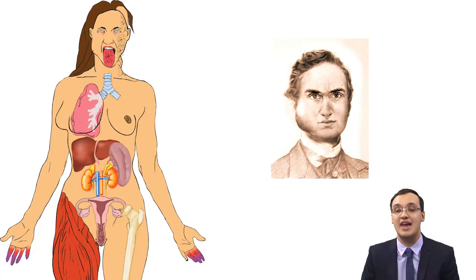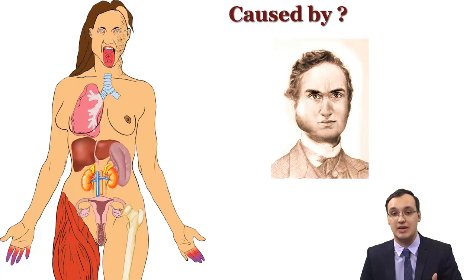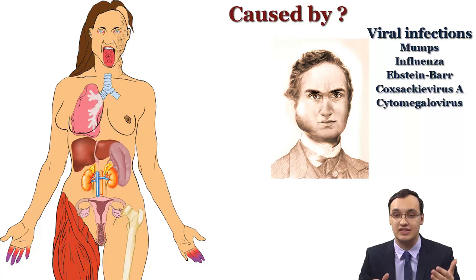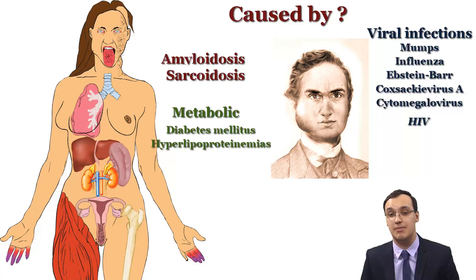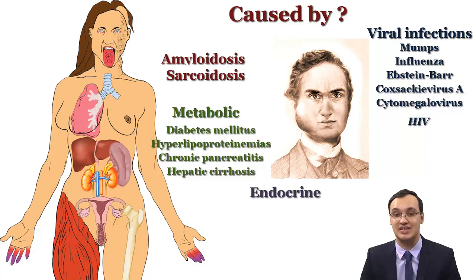Enlarged parotid glands can be caused by viral infections like mumps, influenza, Epstein-Barr, Coxsackievirus A, cytomegalovirus, and even HIV. It can also be caused by amyloidosis, sarcoidosis, metabolic problems like diabetes mellitus, hyperlipoproteinemia, chronic pancreatitis, and hepatic cirrhosis. Endocrine problems like acromegaly and gonadal hypofunction can also cause enlarged parotid glands.